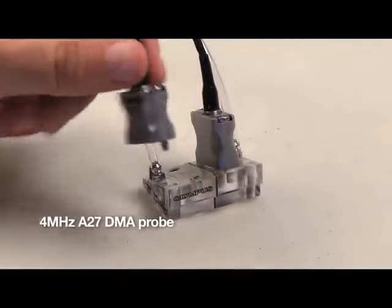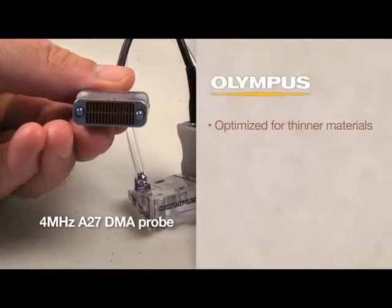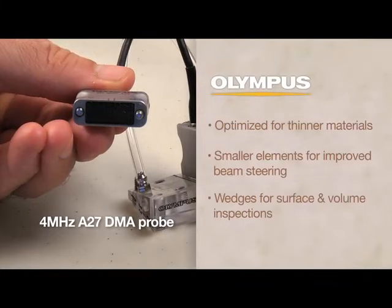The 4 MHz A27 DMA probe uses a 2x16 element configuration in each housing and is optimized for thinner materials using smaller elements for improved beam steering and surface inspections.